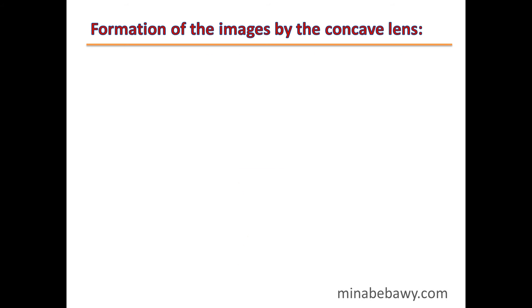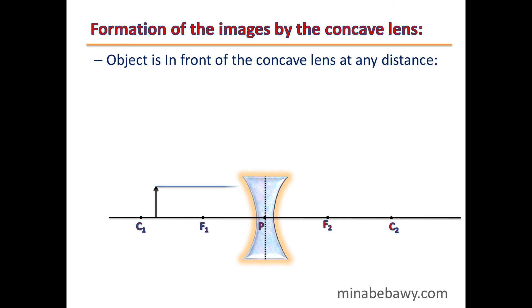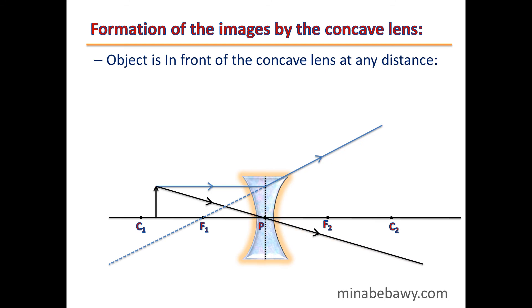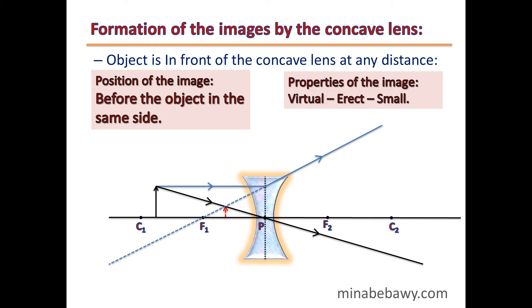Formation of images by a concave lens: For an object in front of a concave lens at any distance, the properties of the image remain constant regardless of the distance. The first light ray, parallel to the principal axis, is refracted and its extension passes through the focus. The second ray passes through the optical center without refraction. The image is formed on the same side as the object, and it is virtual, erect, and small.